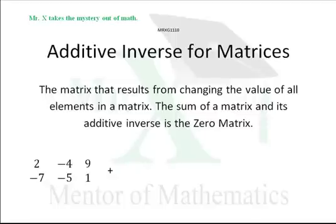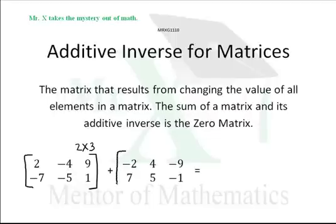Suppose we started with this matrix, a two by three matrix, clearly two rows and three columns. And to that we add another matrix where this two by three matrix has entries or elements that look surprisingly like the first one except the signs of each one have changed.